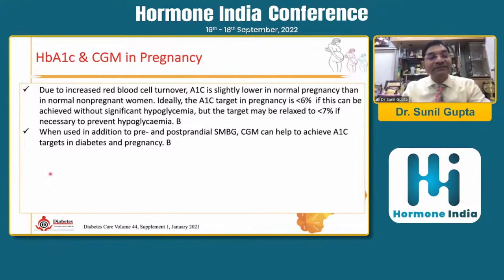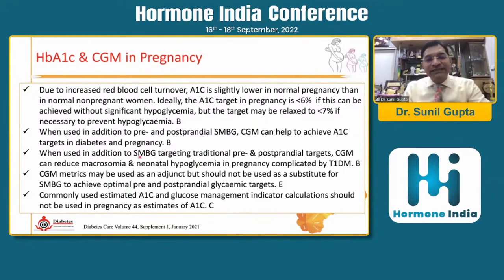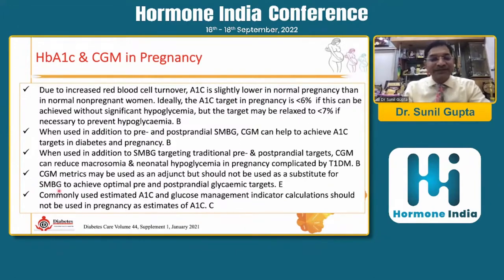Due to increased red cell turnover, HbA1c is slightly lower in normal pregnant women versus non-pregnant women. Ideally, A1c targets should be less than 6 if achievable without significant hypoglycemia, but the target may be relaxed up to 7 if necessary to prevent hypoglycemia — class B evidence. When used in addition to pre- and post-prandial self-monitoring of blood glucose, CGM may help achieve HbA1c targets better and can reduce macrosomia, neonatal hypoglycemia in type 1 diabetes. There is no study in type 2 or GDM. CGM metrics are an adjunct but cannot replace SMBG, which is the gold standard in pregnancy diabetes.